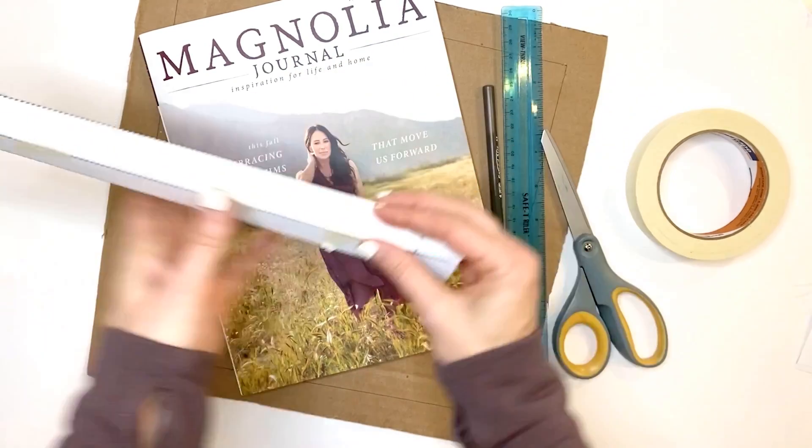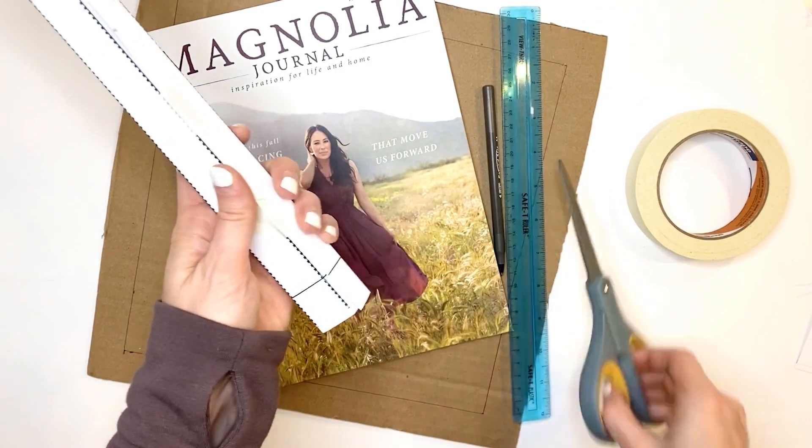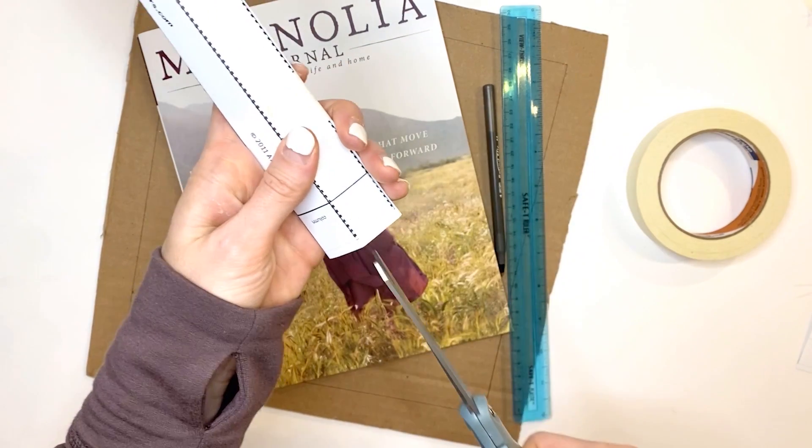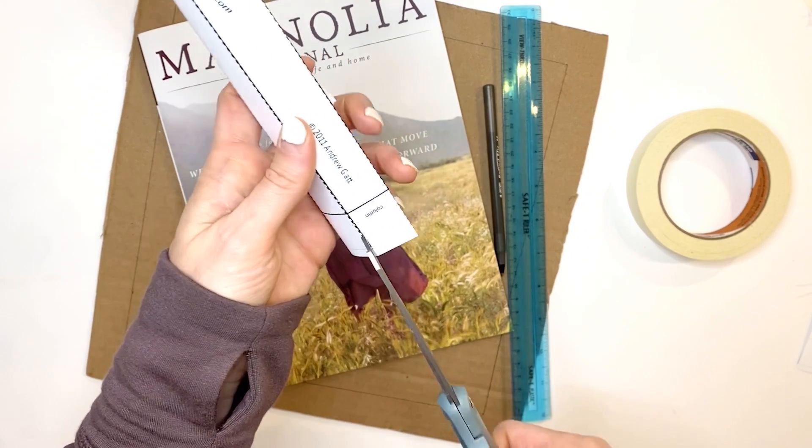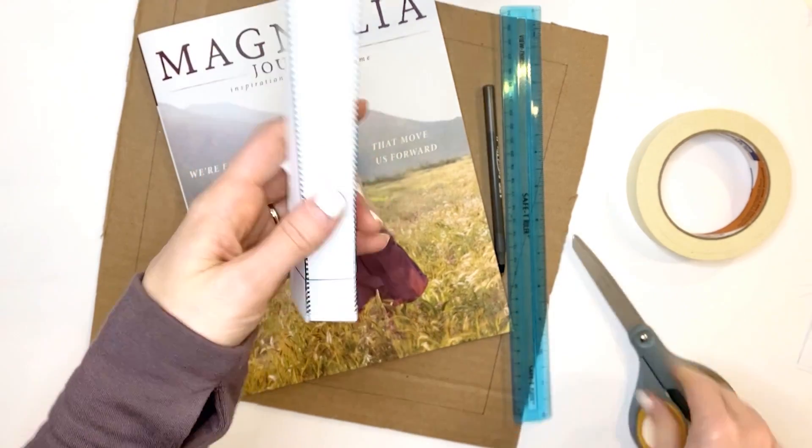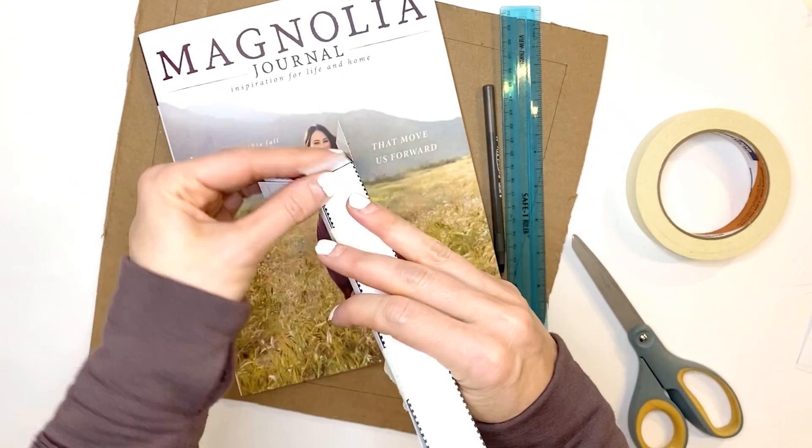Then you're going to come over here to the edge that you folded and cut just up to the line on these dotted lines so that you can fold these flaps to tape this onto your base.